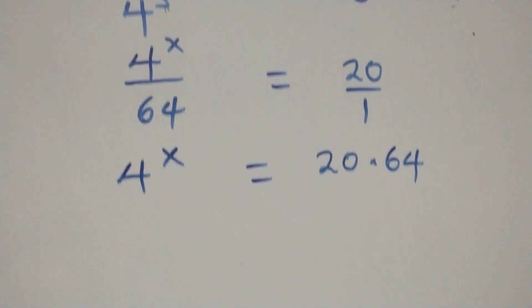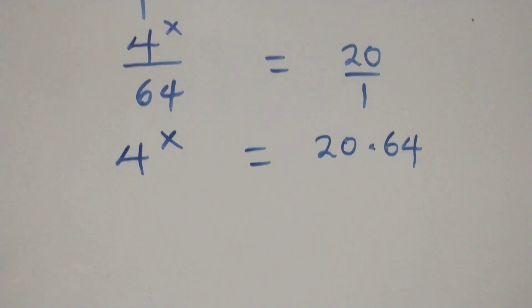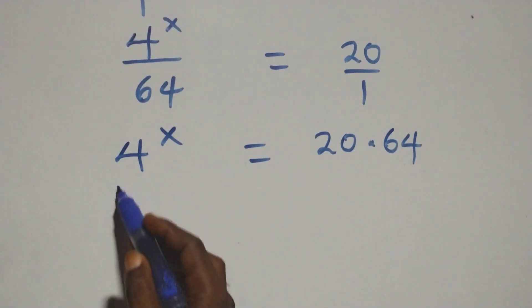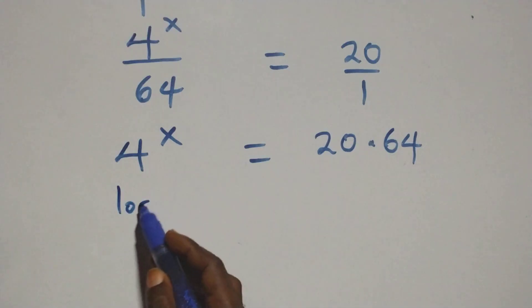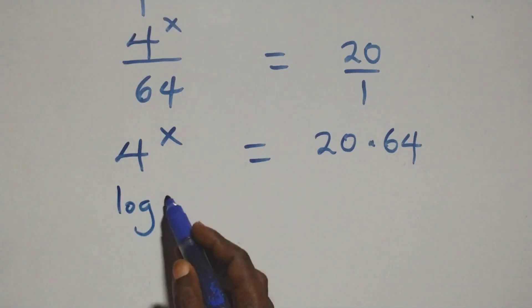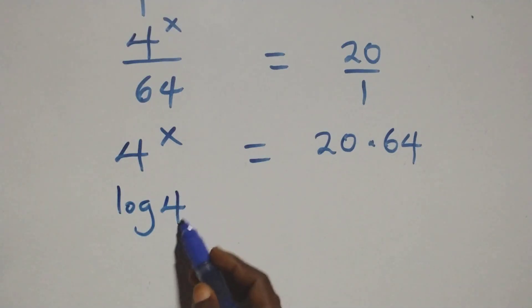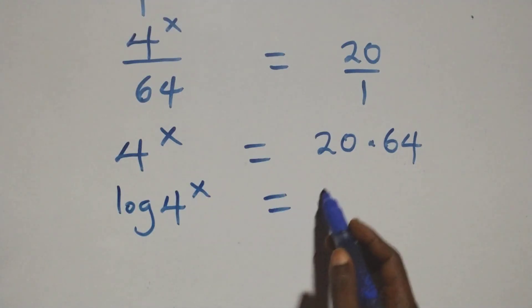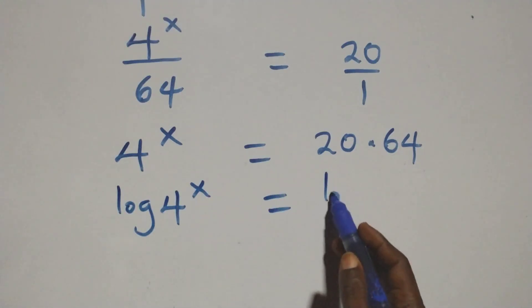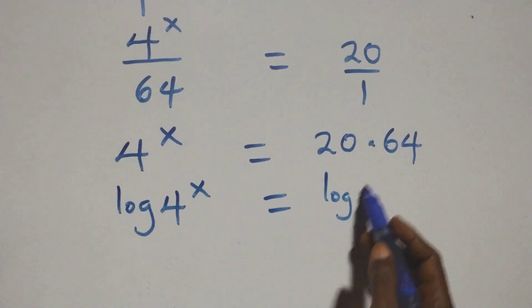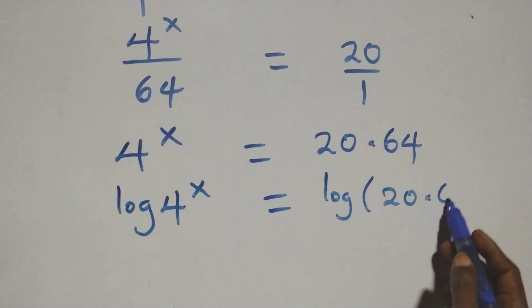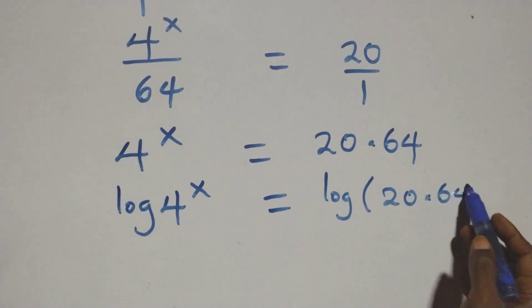Then, the next step here, we take the log on both sides. At this here, we have log of 4 raised to power x equals to log of 20 times 64.